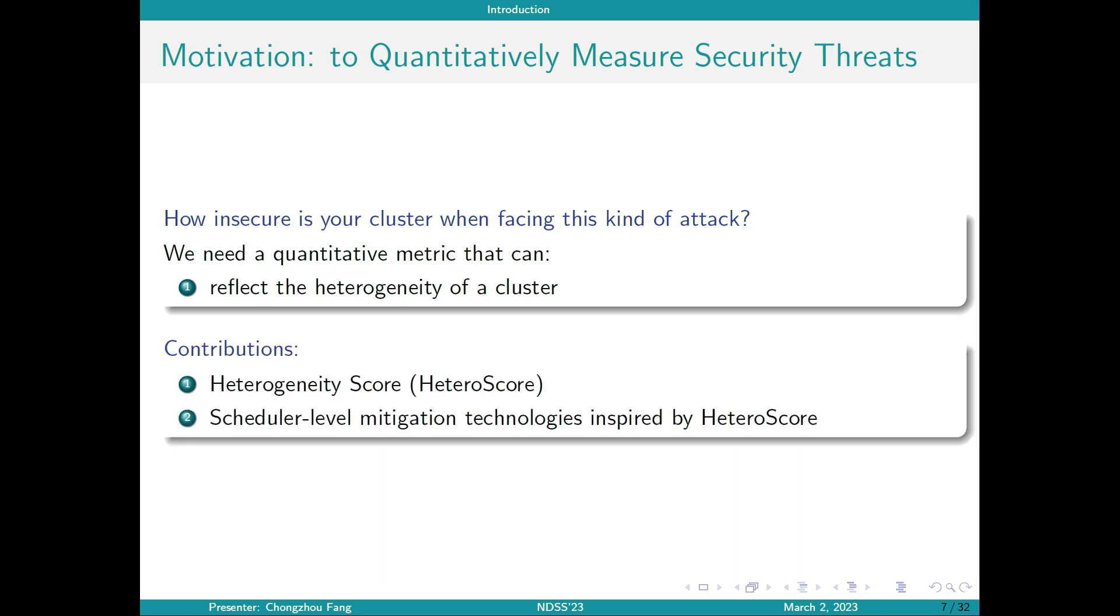So we need a quantitative metric that can reflect the heterogeneity of the cluster, which provides insights into security. The contributions of this paper are: first, we provide a metric for heterogeneity of the cluster, called heterogeneity score or heteroscore, as indicated by the title. Then, based on this metric, we provide scheduler-level mitigation technologies that help defend against collocation attacks.